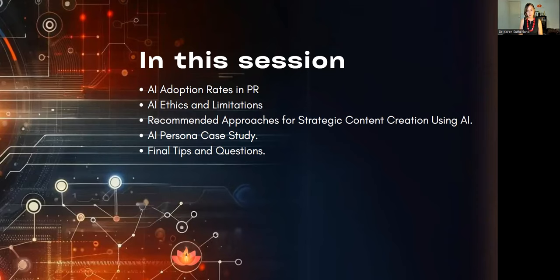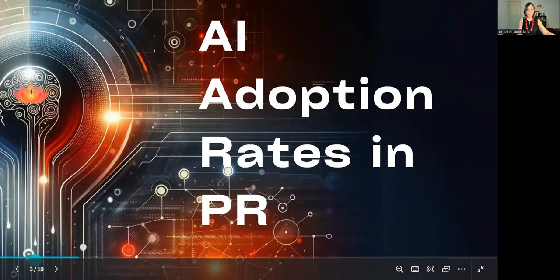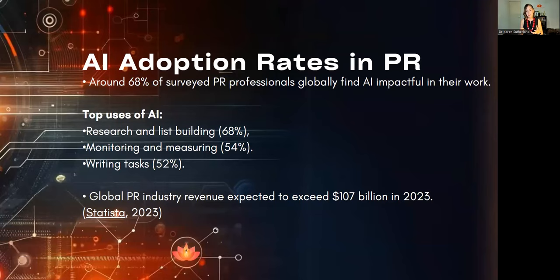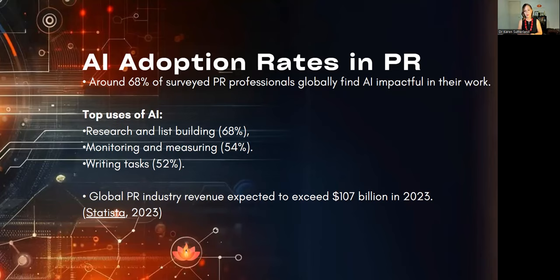Let's move into firstly getting an idea of AI adoption rates, particularly in public relations and strategic communication. According to one study, around 68 to 70% of PR professionals globally are using AI and finding it quite impactful in their work. They're using it for specific things like researching, building media contact lists, monitoring and measuring media and data, social listening, which is really important when managing reputation, and of course writing tasks.